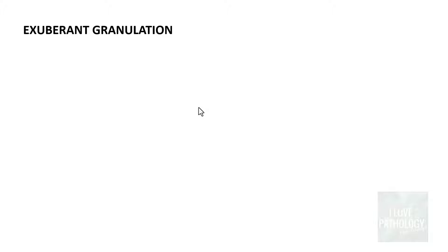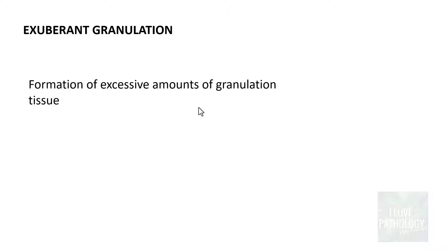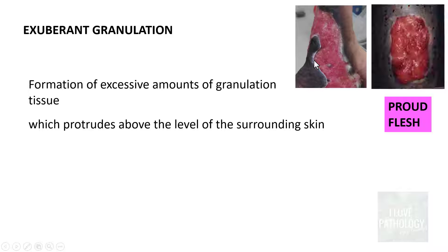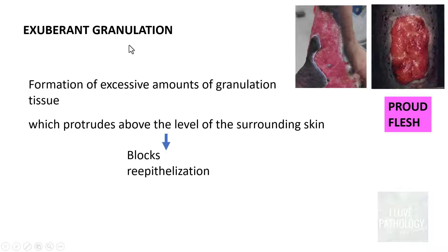When you learn about granulation tissue, you need to know two important things. The first is exuberant granulation tissue — the formation of excessive amounts of granulation tissue, which is a complication of wound healing where the granulation tissue protrudes above the level of the surrounding skin. This is also called proud flesh. This excessive proliferation blocks re-epithelialization, so there is no closure of the wound. The treatment is simply to scrape off the exuberant granulation tissue and then allow re-epithelialization to take place.